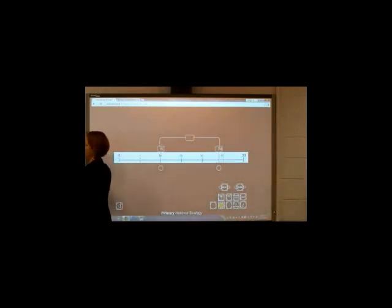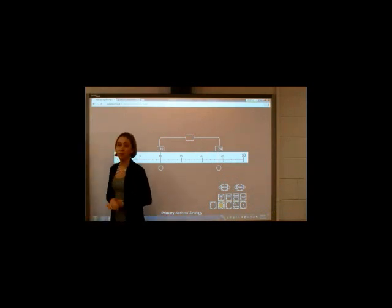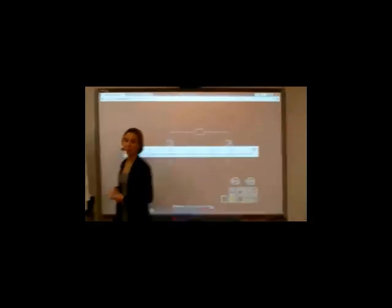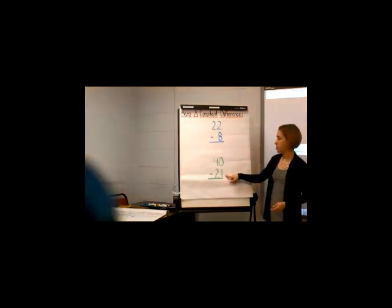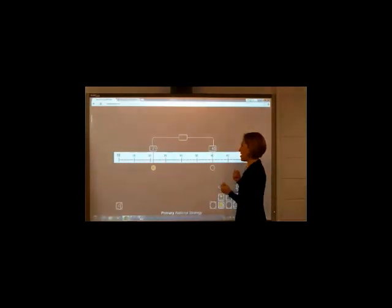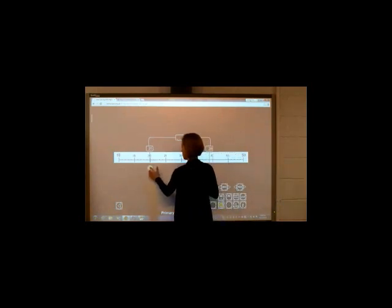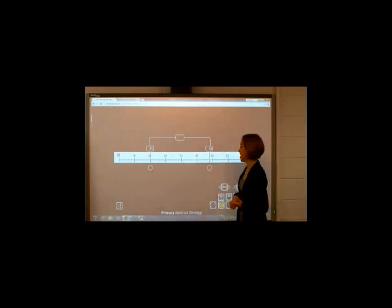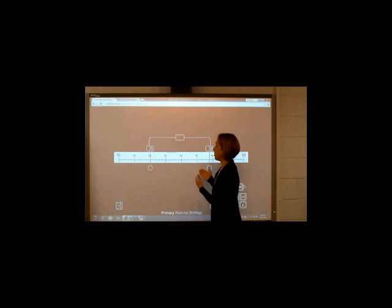Let's try another problem: 40 minus 21. Again, normally we would need to do some regrouping to solve this. I'm going to place both numbers on the number line and modify both numbers by the same amount, keeping that difference the same, in order to make the problem easier. This time let's try shifting the numbers to the left, or taking one away from each number — making each one smaller while keeping the space between them the same. The problem becomes 39 minus 20. Look how easy that problem just became — the difference is the same, but it's much easier to solve now.